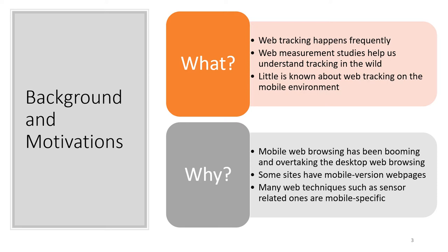So we decided to explore web tracking on mobile websites and desktop websites. There are several reasons. First, mobile web browsing has been booming and is overtaking desktop browsing according to a recent report. Second, some websites have mobile version web pages — for example, Facebook.com has its mobile version and desktop version. The question is: are the web tracking practices different between them? Third, many web techniques such as sensor-related ones are mobile specific. The question is: could those techniques specific to mobile environments be leveraged for mobile web tracking?